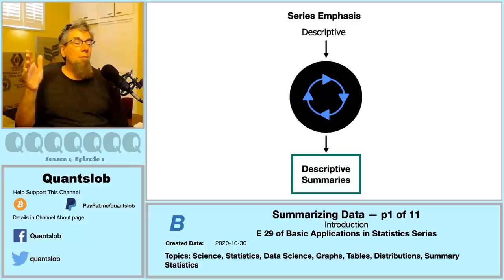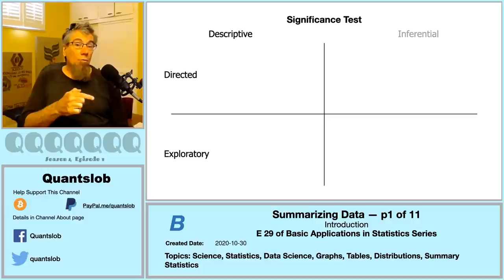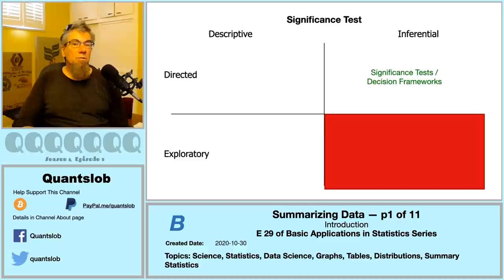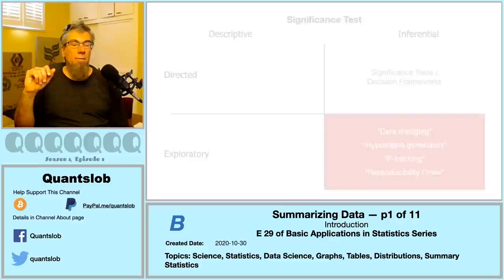With statistical significance testing, our inference is performed in a directed investigative environment. Significance testing is not to be carried out in a purely exploratory environment — doing so can lead to data dredging, which can lead to hypothesis generation resulting in p-hacking, which may ultimately contribute to the so-called reproducibility crisis. Just thought I'd mention it.